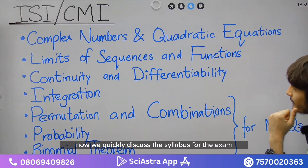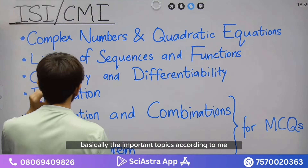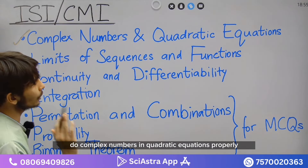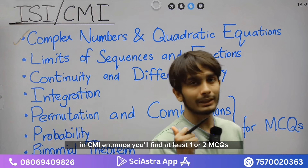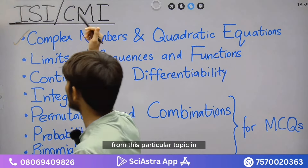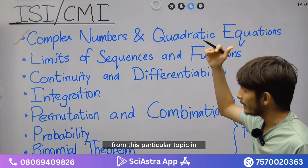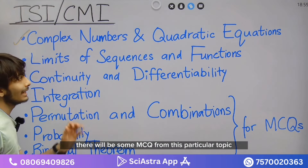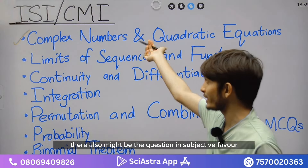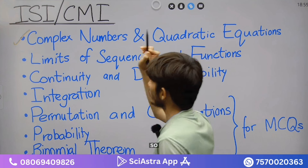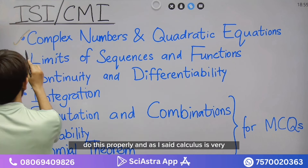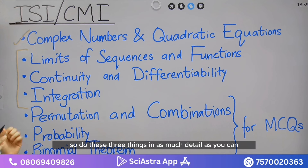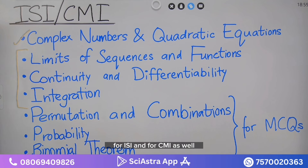Now let's quickly discuss the important topics for the exam. First, do complex numbers and quadratic equations properly. In CMI entrance you'll find at least one or two MCQs from this topic, and in ISI as well there will be some MCQs from it. There might also be a question in the subjective paper from here. And as I said, calculus is very, very important. Do these things in as much detail as you can for both ISI and CMI.